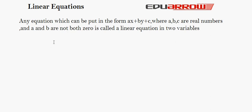Now, linear equations in two variables. Any equation which can be put in the form ax plus by plus c equals 0, where a, b, c are real numbers and a and b are not both zeros, is called a linear equation in two variables. For example, 2x plus 5y minus 3 is equal to 0, where a is 2, b is 5, and c is minus 3, and a and b are not 0.